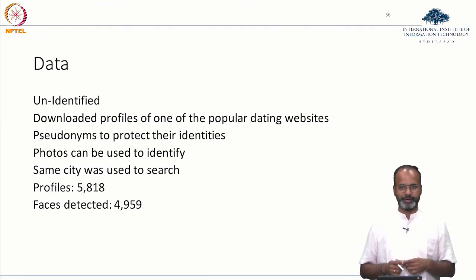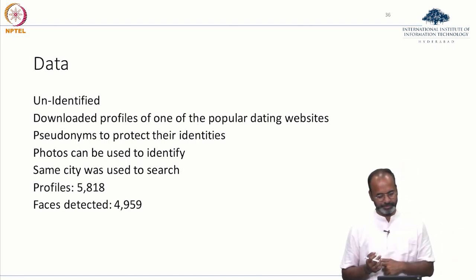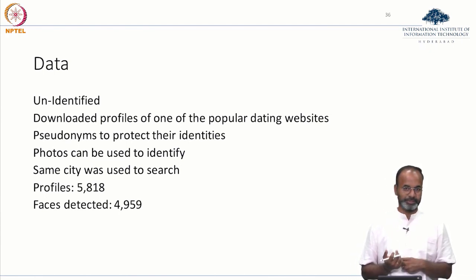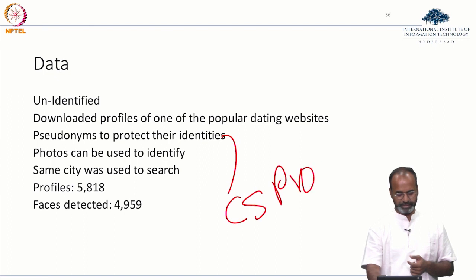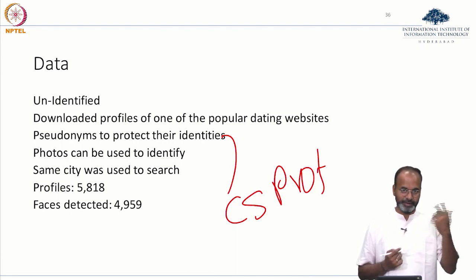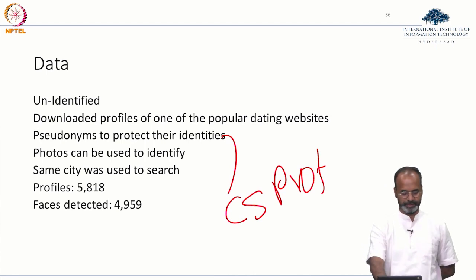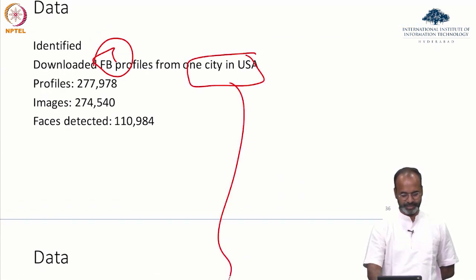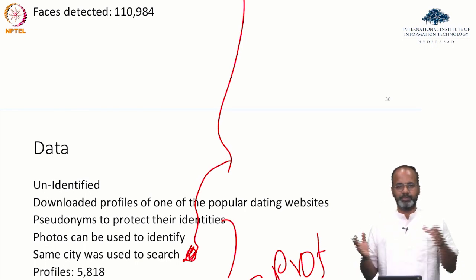Now looking at the unidentified data — unidentified data is from a matrimonial website like jeevansathi.com or matrimonial.com. I could create a profile in whatever name I want — that is unidentified. They downloaded profiles from one popular dating website where people use pseudonyms to protect their identities. The same city was used to search, given that they did a search for one city in the US — they used the same city for data collection in order to make the comparison and merge the data.